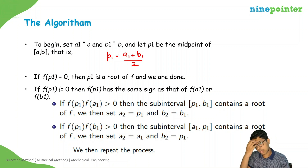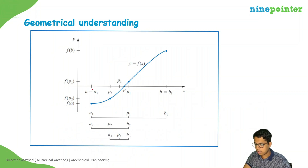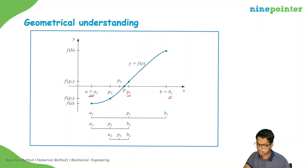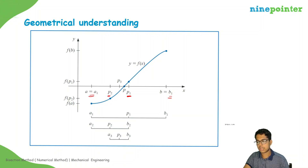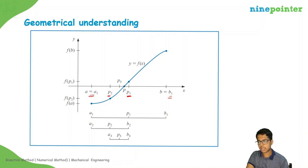This should paint a clearer picture. Here are our starting points a₁ and b₁, and we can see f(a) and f(b) are on opposite sides. We take their midpoint p₁. We can see that f(a₁) and f(p₁) lie on opposite sides, which means there is a root between them, guaranteed by the intermediate value theorem. So we take their midpoint again, which is p₂. We see that f(a₁) and f(p₂) are on the same side, so the root lies between p₂ and p₁. We keep dividing these subintervals until we find a satisfactory root.